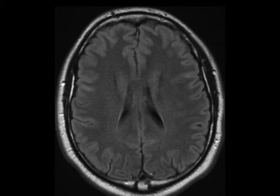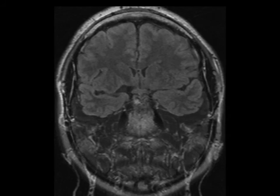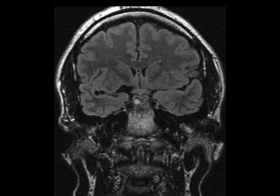Gray matter heterotopia results from the interruption of the normal neuronal migration from the periventricular region to the cortex. The end result is normal neural tissue in an abnormal location.